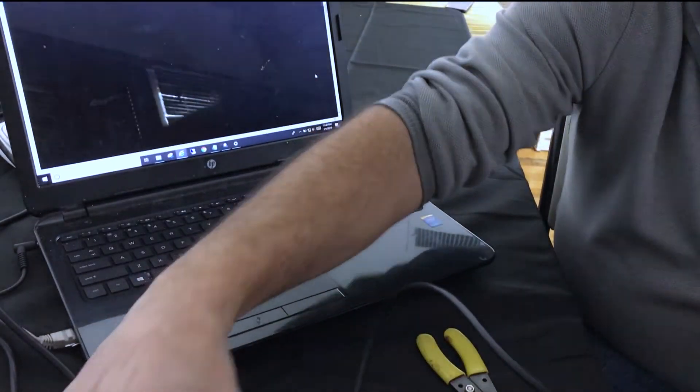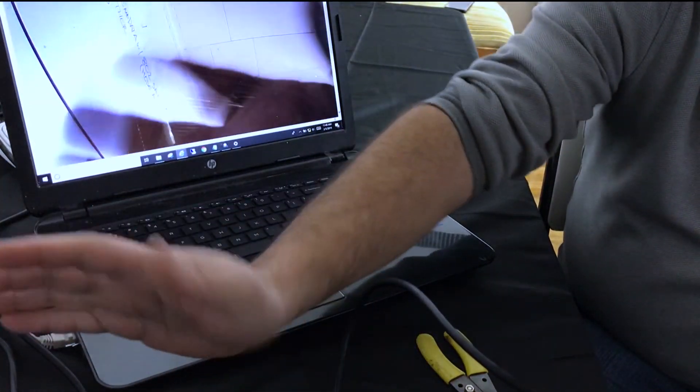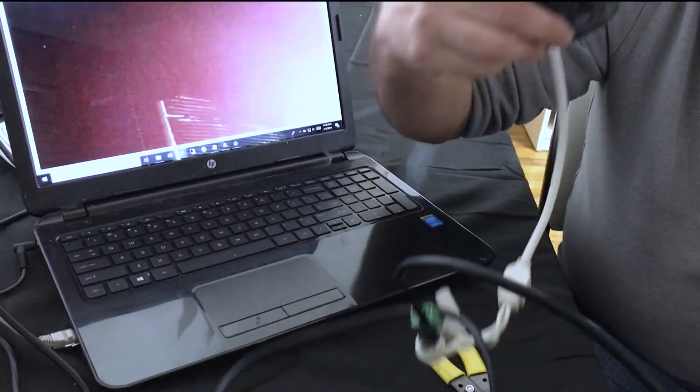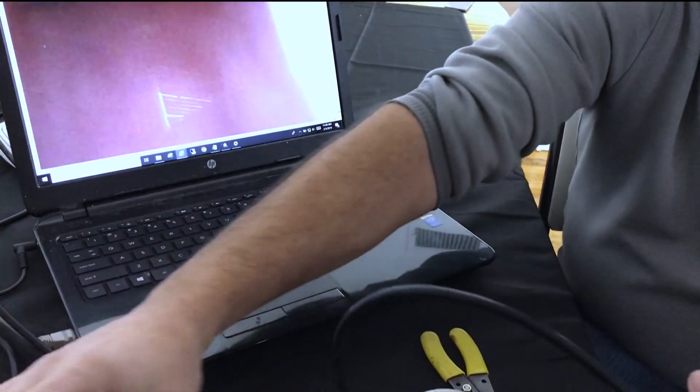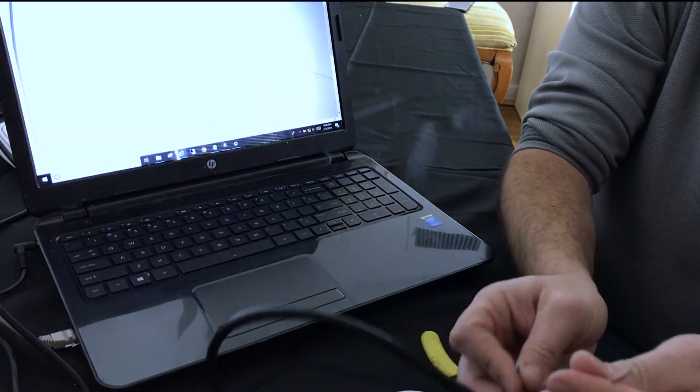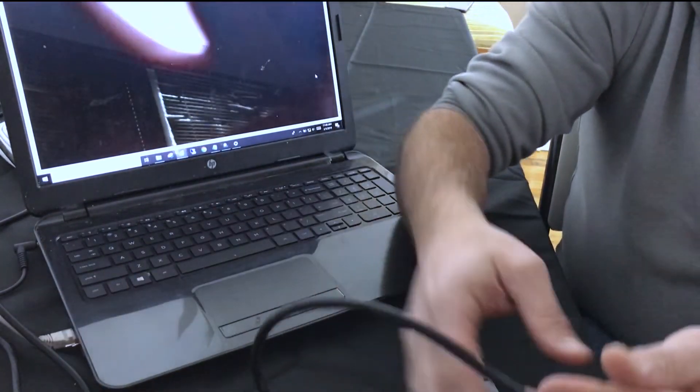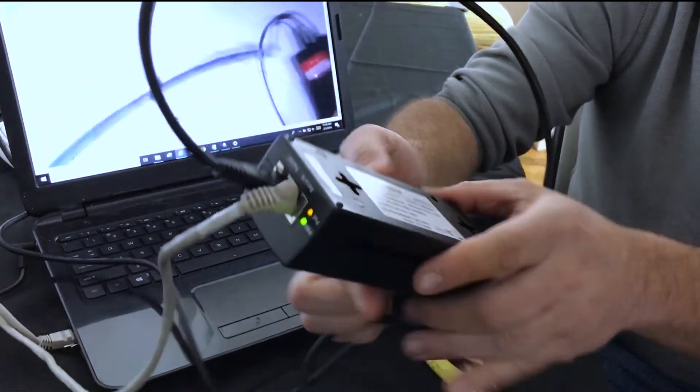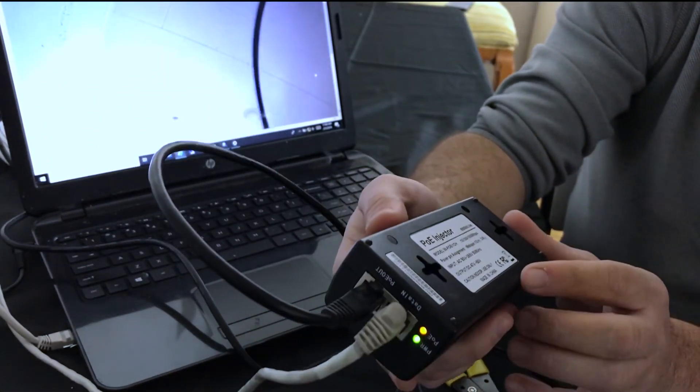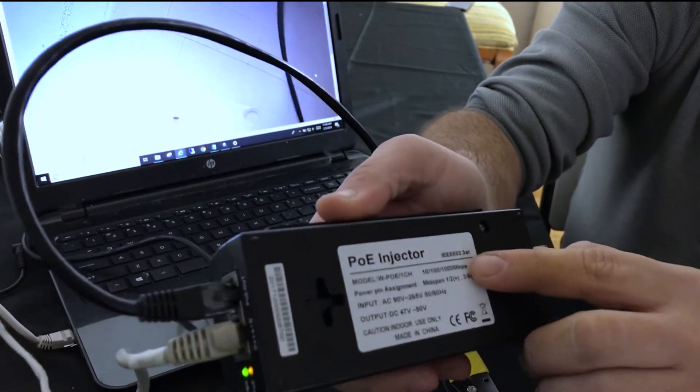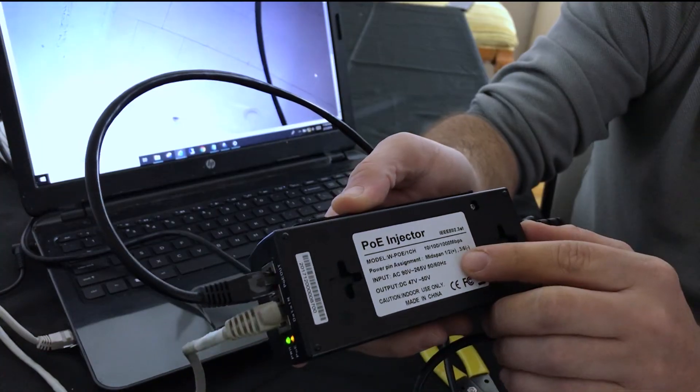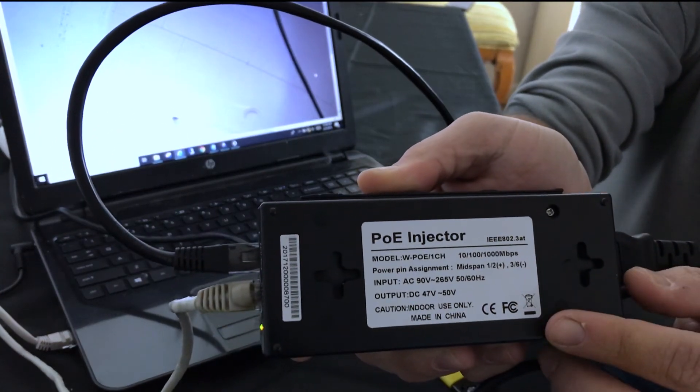Here I have the camera, and I'm still waving my hand, and the camera itself is connected to the cable. It's working on specifically two pairs over here. That's because this injector is 802.3 AF and it uses pins one, two, three, and six.